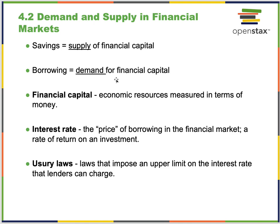Switching from labor to financial markets: the amount of money people have in a bank is the supply of financial capital. There's a supply of money in the banking system and a demand to borrow it. You deposit money, the bank pays you interest, then lends that money to others at a higher interest rate — the bank makes money and so do you.